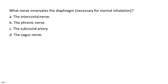What nerve innervates the diaphragm, necessary for normal inhalation? A. The intercostal nerve. B. The phrenic nerve. C. The subcostal artery. D. The vagus nerve.